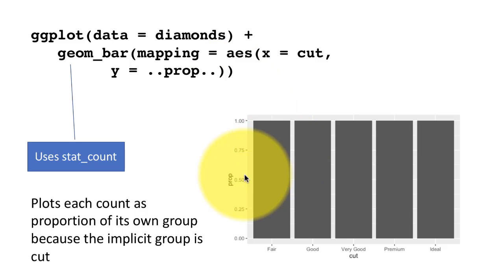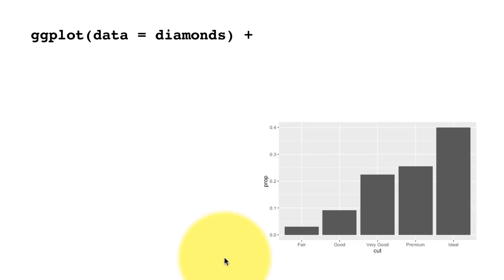When you see this happening, if you miss the group equals one, if you see this happen, then you know that's what happened. Just add group equals one, and that group equals one has to go inside aesthetic.